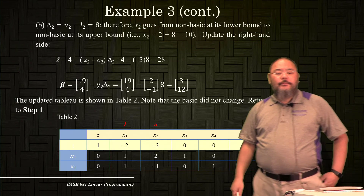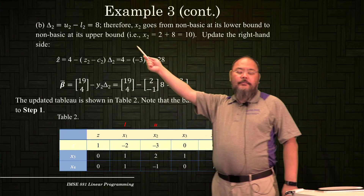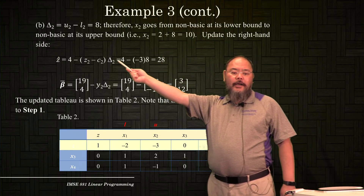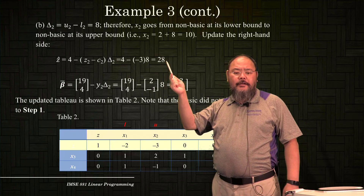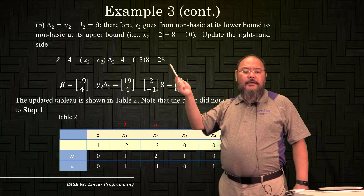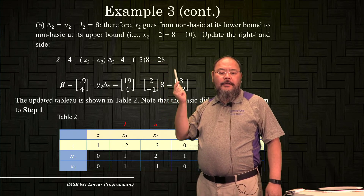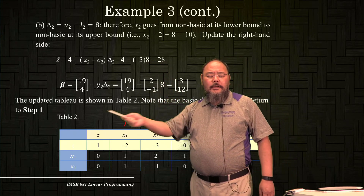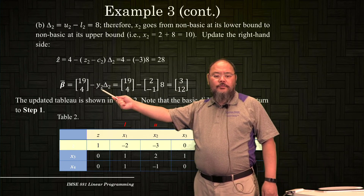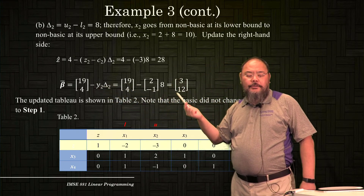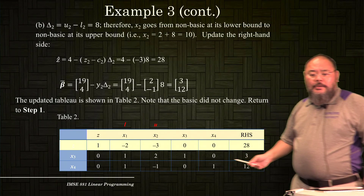Delta 2 equals u2 minus l2, which is 8. So x2 goes from its lower bound to its upper bound while remaining non-basic. We update the right-hand side and the objective function value. The updated objective function value equals the current value minus 3 times delta 2: 4 plus 3 times 8 equals 20. The updated basic variables are: beta bar equals [19, 4] minus y2 times delta 2, giving [3, 12]. That's the new tableau.